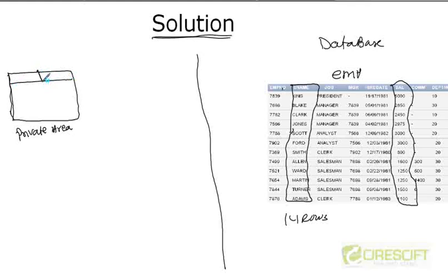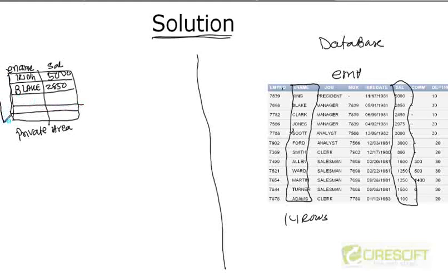So in this private area I will have ename and sal. The first row might be KING with salary 1000, the second row BLAKE with salary 2850, and so on — all 14 rows. Then from this private area, I fetch to my temporary variables v_name and v_sal, one row at a time.